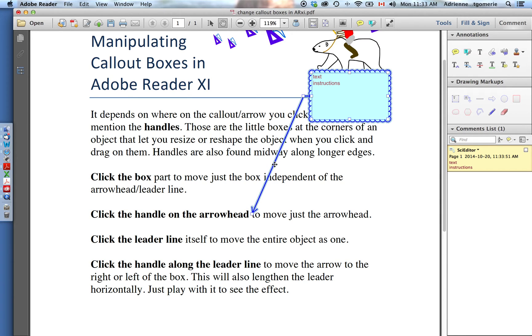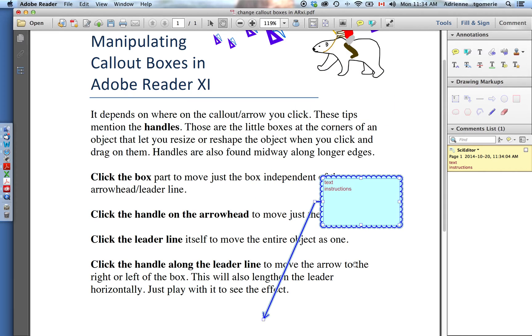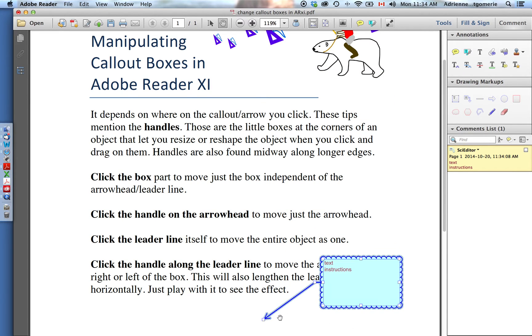As I hover over the middle of the leader line, you'll notice I get that four-direction arrow. That means I can move the entire object. If I click and drag now, I'm moving the entire thing together. Click the text box to move just it.